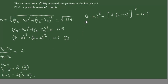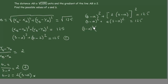Expanding this gives us (3 minus A) squared plus 2 squared times (3 minus A) squared. We can see there is a common factor of (3 minus A) squared, so we factor it out: (3 minus A) squared times (1 plus 4) equals 125. That gives us (3 minus A) squared times 5 equals 125. Dividing both sides by 5, we get (3 minus A) squared equals 25.